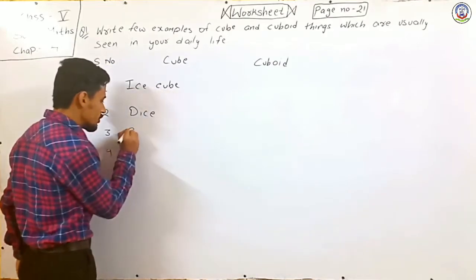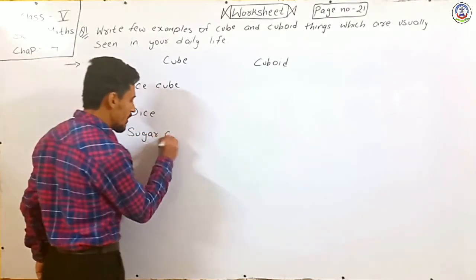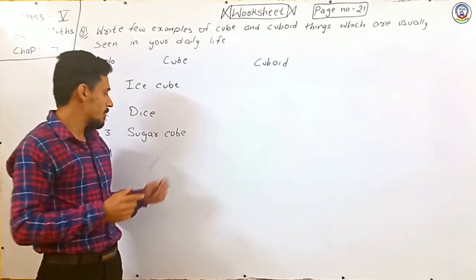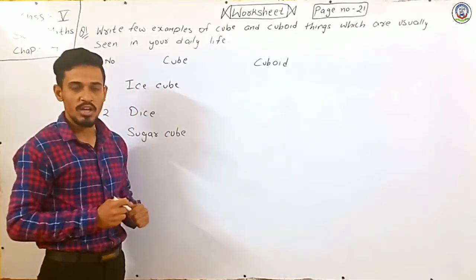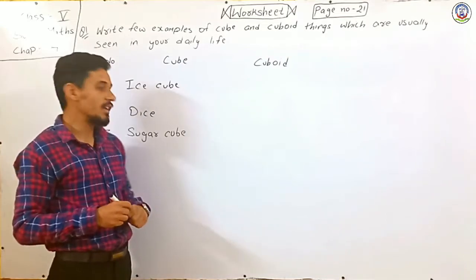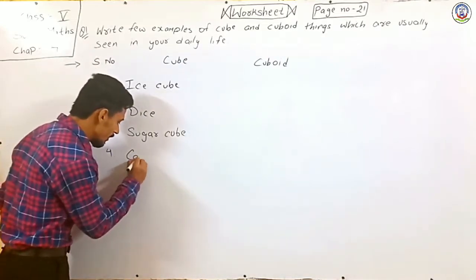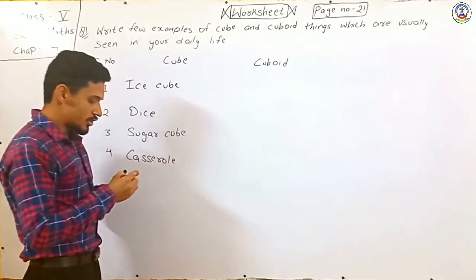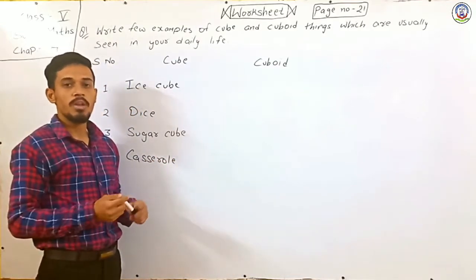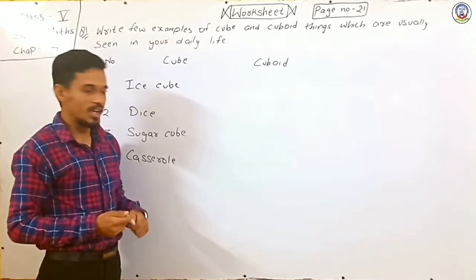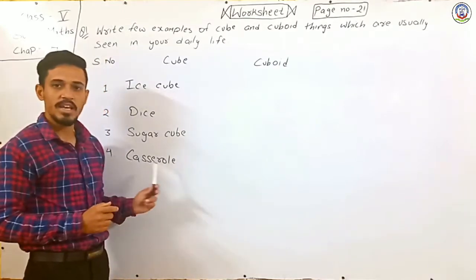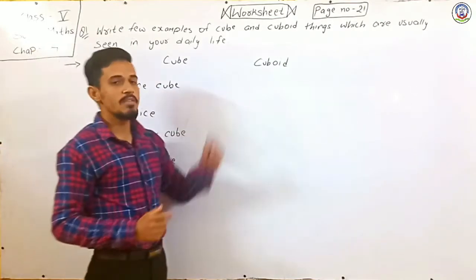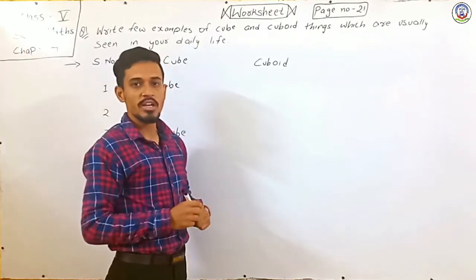Third is sugar cube. We use sugar cube. Now, the next thing we write here is casserole.